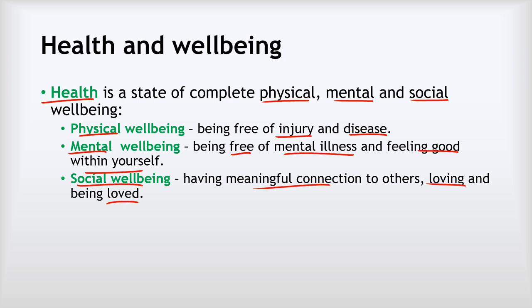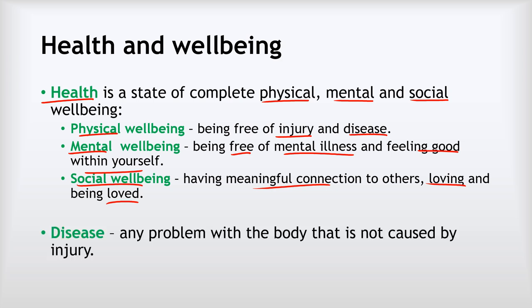Social well-being is about loving people and being loved by people. And if you don't have all three of those things in place, you can't describe yourself as fully healthy. All of us will have a mixed picture with those, but good health is about having the balance of all three. Poor health happens when those things aren't in place. In this unit, we're focusing overwhelmingly on physical health and particularly on disease, which is any problem with the body that is not caused by injury.